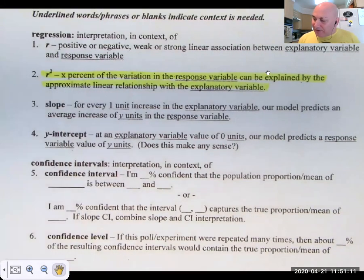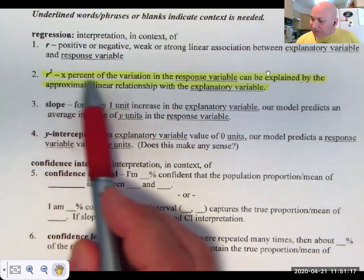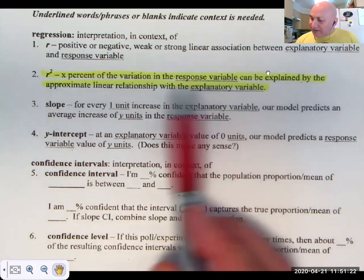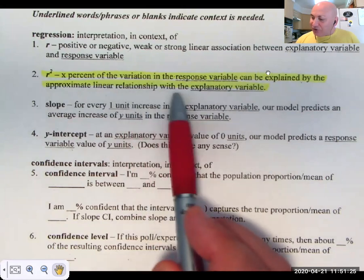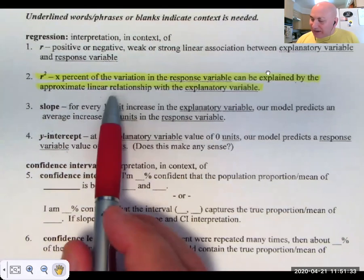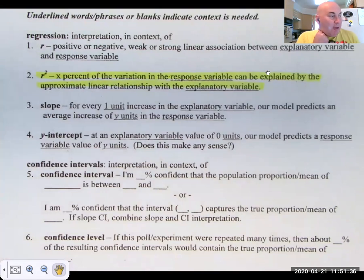But r squared, if you think of it as the explained divided by the unexplained, r squared is the percent of the variation of the response variable that can be explained by the approximate linear relationship with the explanatory variable. So here's an example. What we mean by that is it's explained by it. That's where our explained divided by total comes from.